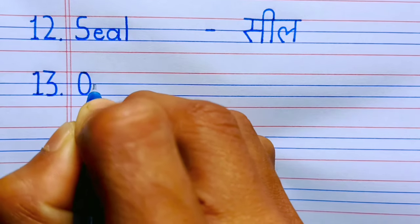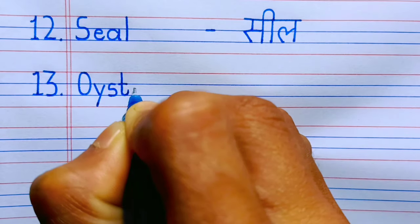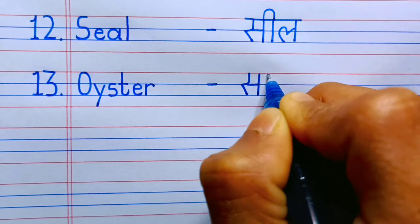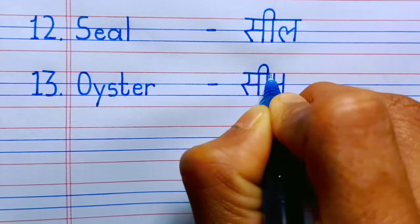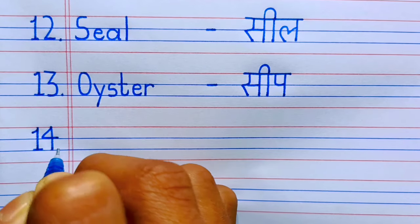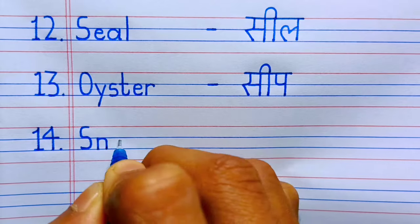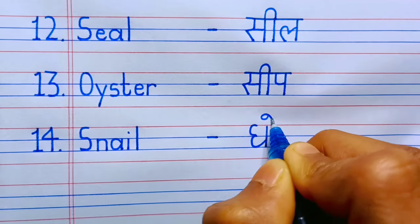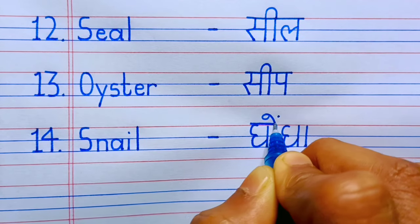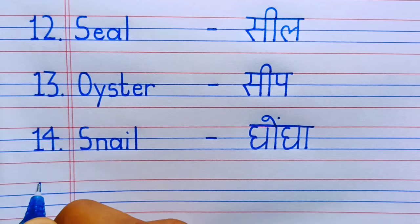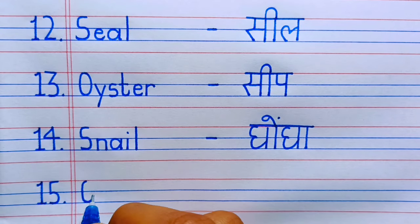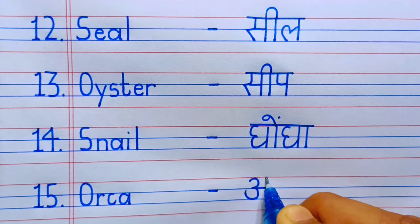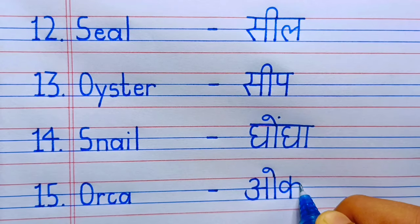Number 13: Oyster. Oyster means sheep. Number 14: S-N-A-I-L, snail. Snail means ghonga. Number 15: O-R-C-A, orca. Orca means orca.